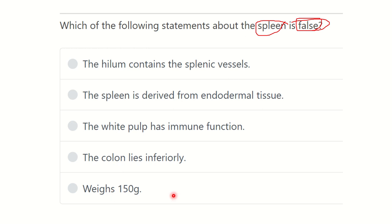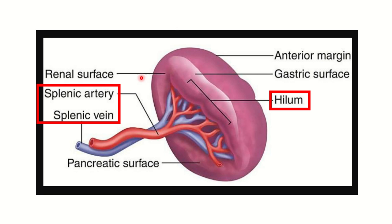Looking at the spleen, we can identify different parts: the anterior margin, the posterior margin, the pancreatic surface, and the gastric surface. The hilum is where blood vessels enter and exit. At the level of the hilum, the splenic artery and splenic vein transmit through the hilum of the spleen.